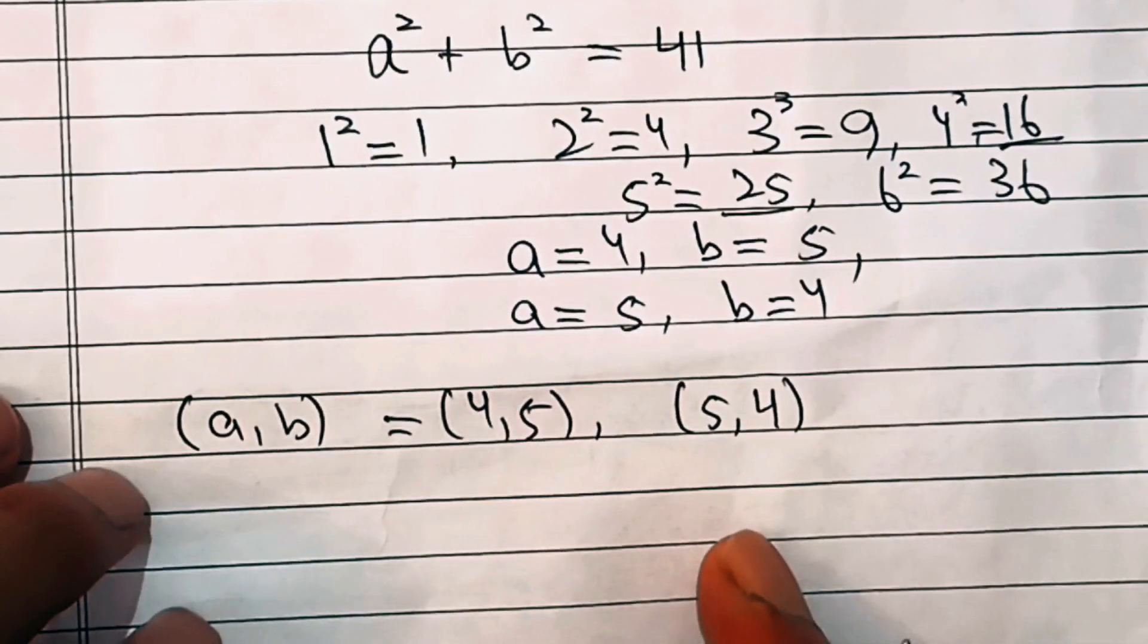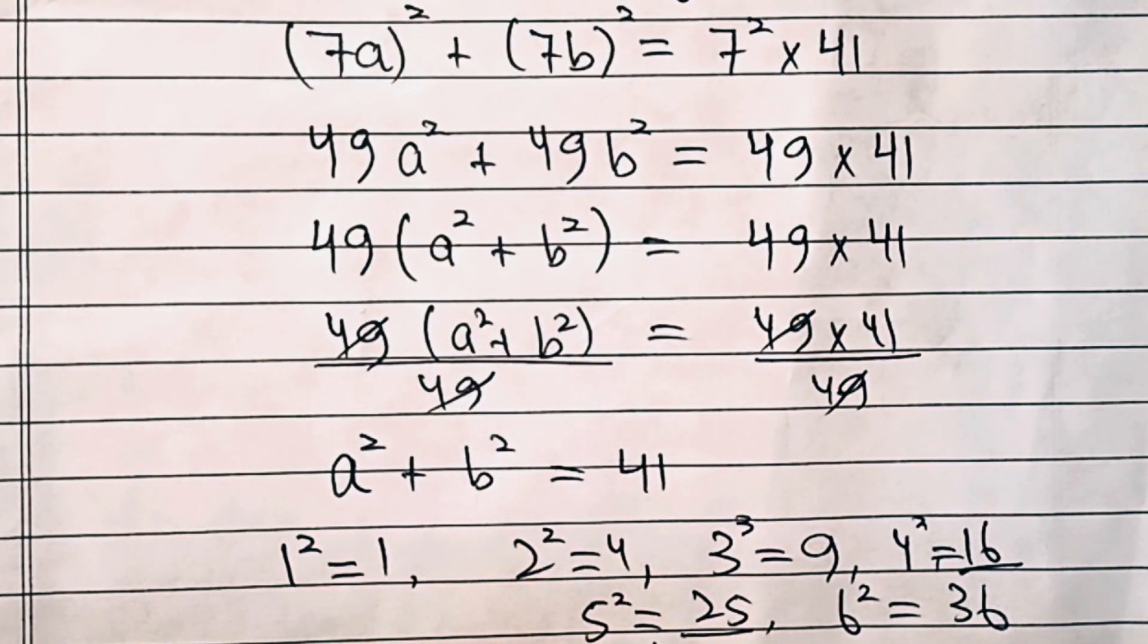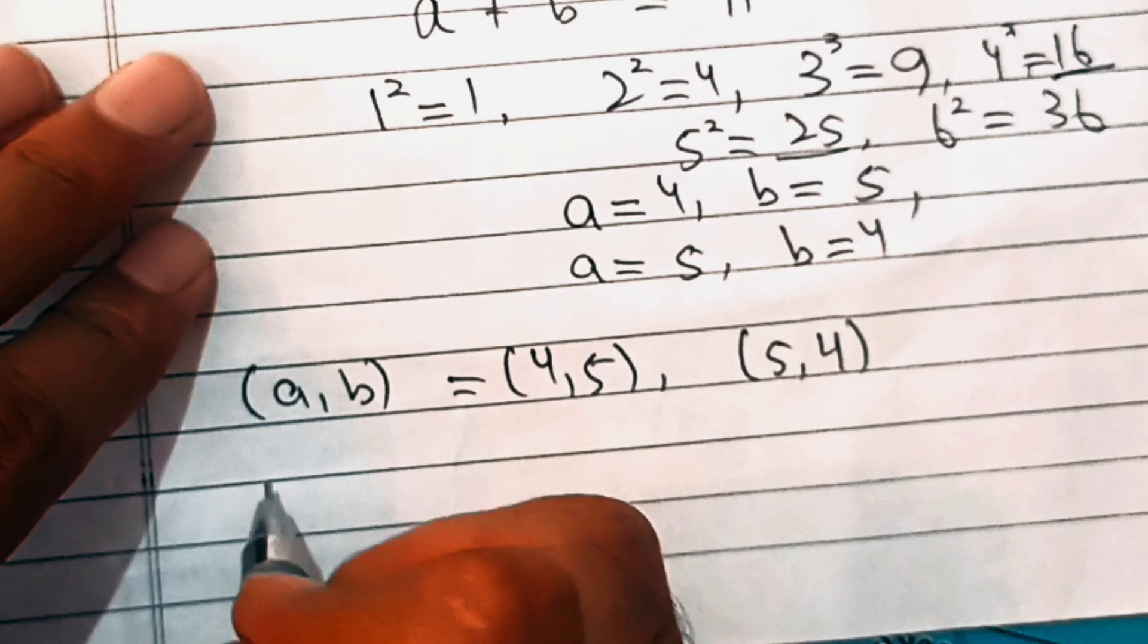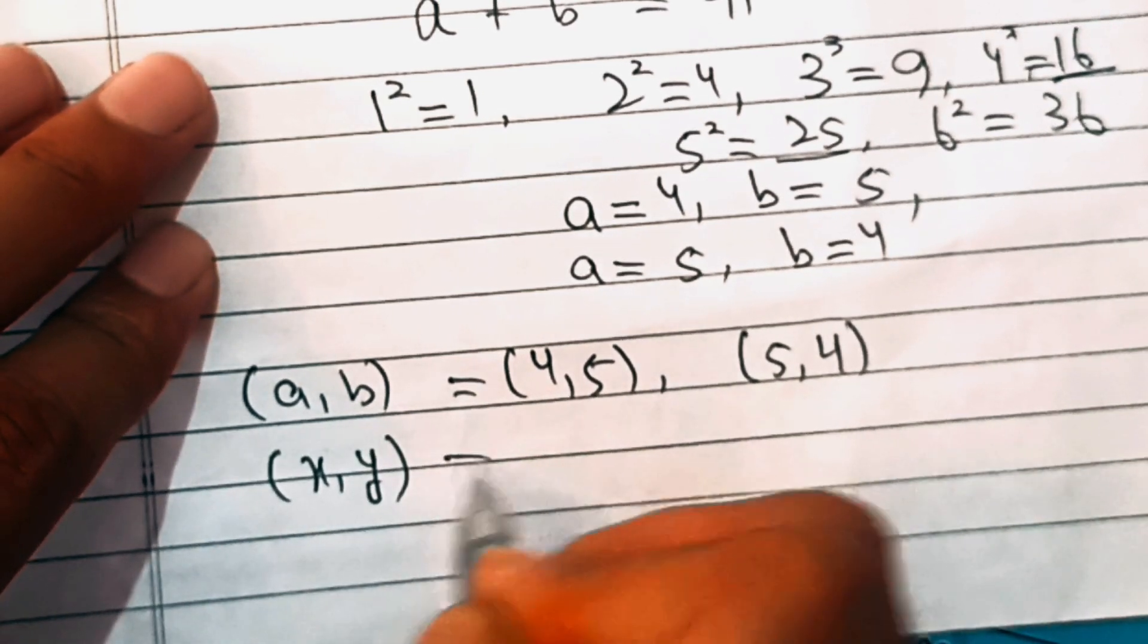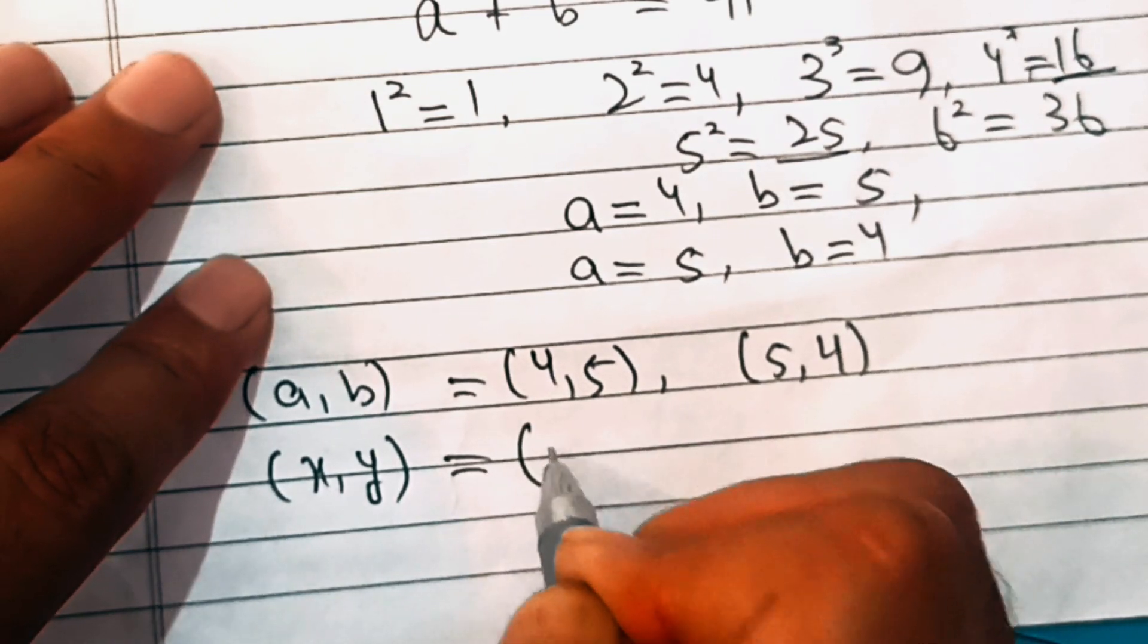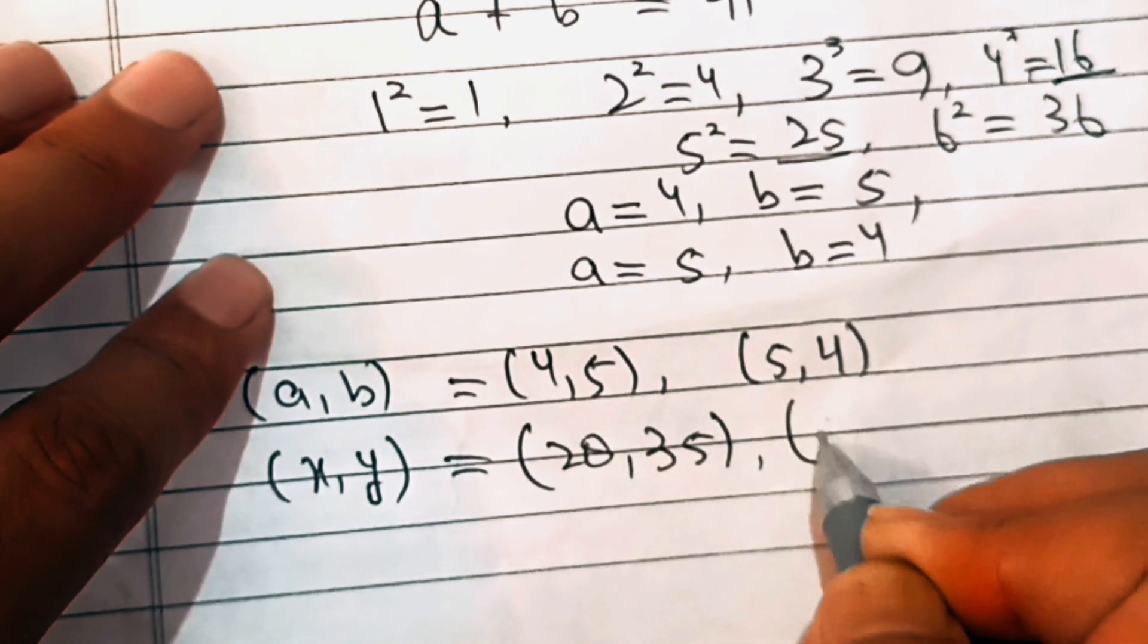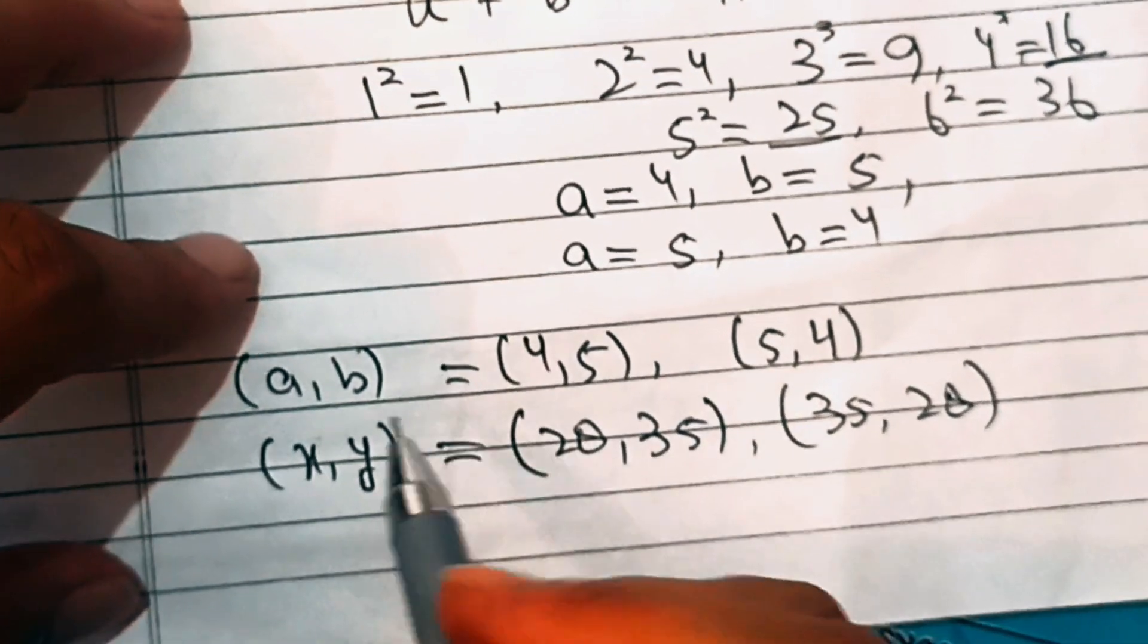Now if we substitute the values of x and y, because we know x is seven times a and y is seven times b, so x comma y equals seven times four is 28 and seven times five is 35, or 35 comma 28. So these are the two solution pairs of the required equation.